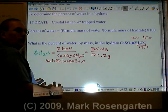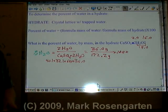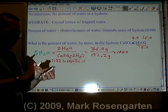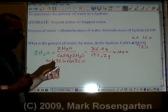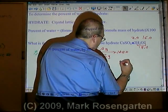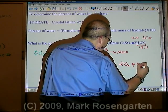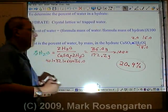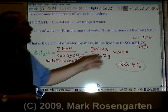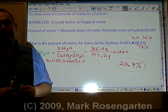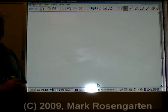That gives us a grand total of 172.2 grams, which you will then multiply by 100 to get your final answer. 36.0 divided by 172.2 gives us a total percent of 20.9% water. So 20.9% of the mass of this hydrate comes from water.